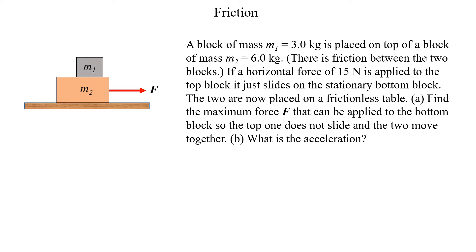Here we have a block with a mass m1 equal to three kilograms placed on top of a block of mass m2 equal to six kilograms, and there's friction between the two blocks. A horizontal force of 15 Newtons applied to the top block just makes it slide on the bottom block. So the maximum static friction will be just less than 15 Newtons. Part A: we want to find the maximum force F that can be applied to the bottom block so that the top one does not slide and the two will move together, and then find that acceleration.